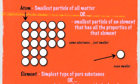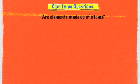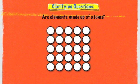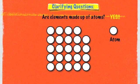That phrase 'that has all the properties of that element' is a key phrase. Here are a few questions to help clarify the similarities and differences between atoms and elements. The first question is: are elements made up of atoms? Here are the elements we just saw. Is this element made up of atoms? Obviously yes, because there's the atom. So yes, elements are made up of atoms.